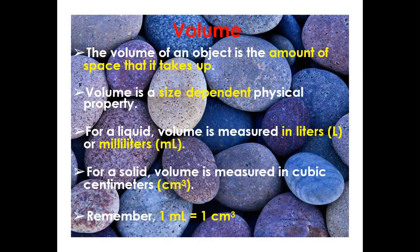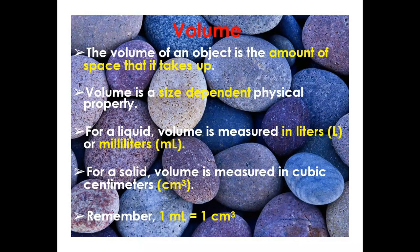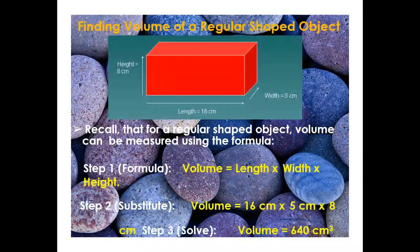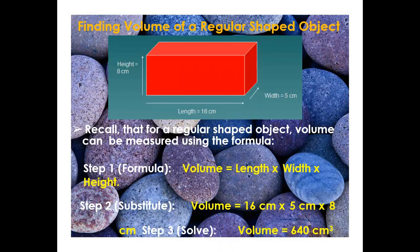Volume is the amount of space an object takes up and is classified as a size-dependent property. For liquids, volume is measured in liters and milliliters; for solids, it is measured in cubic centimeters. Remember: one milliliter equals one cubic centimeter. For a regular-shaped box, volume is calculated using the formula: Volume = length × width × height. For example, with height 8 cm, length 16 cm, and width 5 cm, the volume is 16 × 5 × 8 = 640 cubic centimeters.